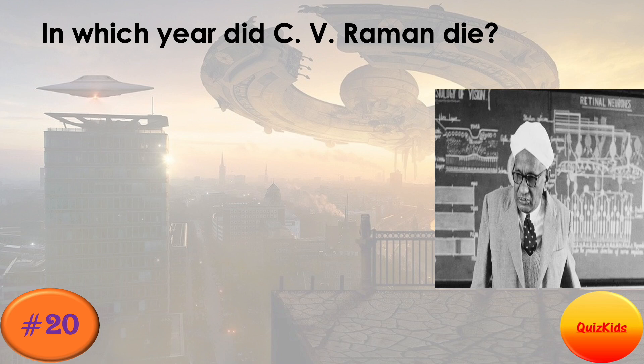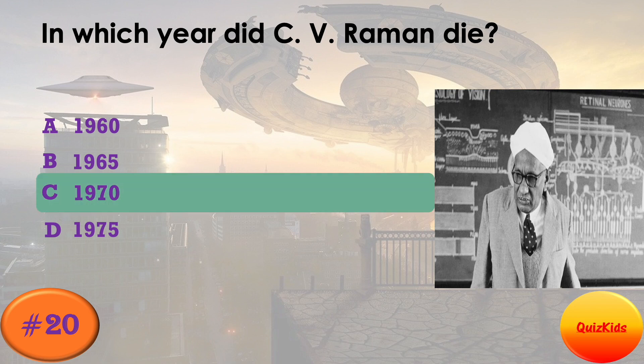In which year did C.V. Raman die? The right answer is Option C — 1970. He left this world on 21st November in the year 1970.